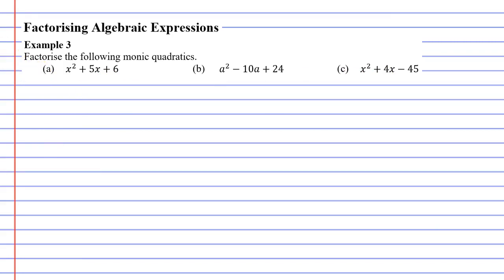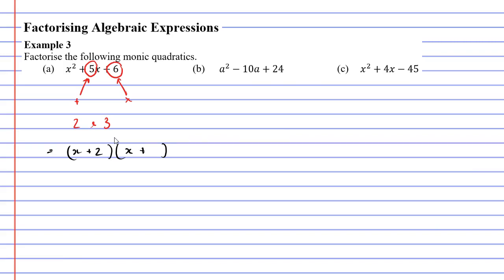We'll start with question A. We have a number in the middle term and a number for the last term, and we're looking for two numbers that add to make the middle term and multiply to make the last term. Those two numbers are 2 and 3, since 2 plus 3 is 5 and 2 times 3 is 6. So the factorized version is x plus 2 times x plus 3.